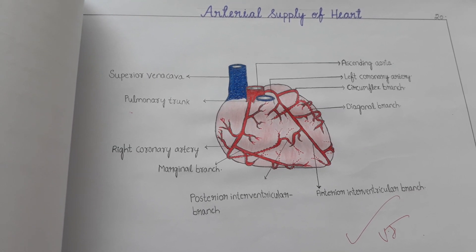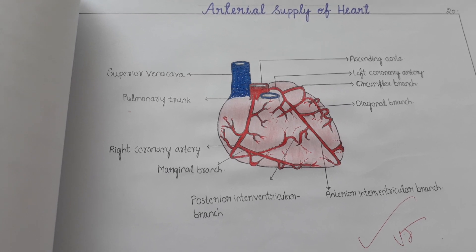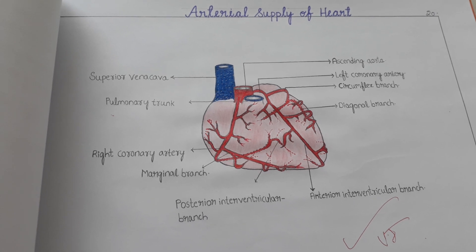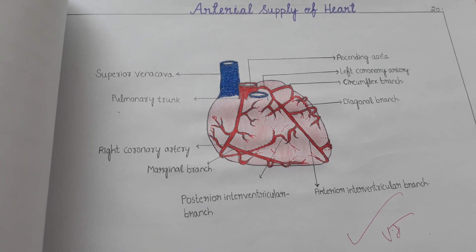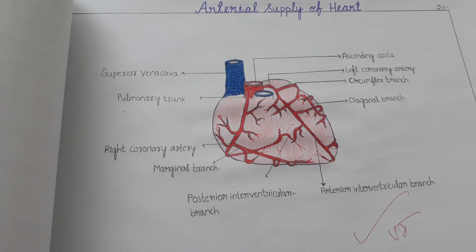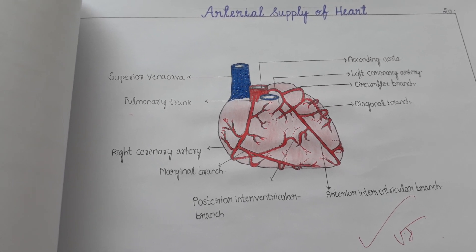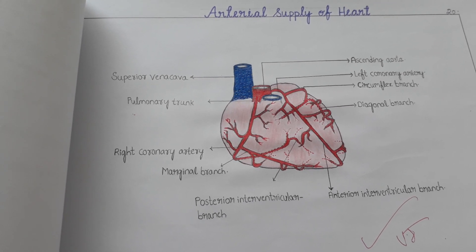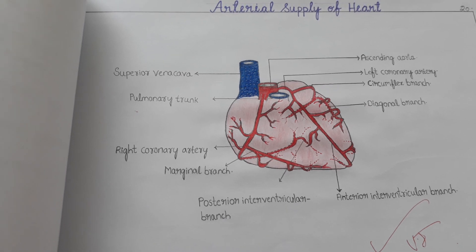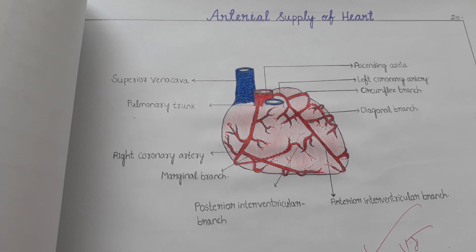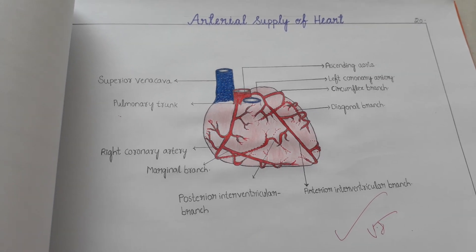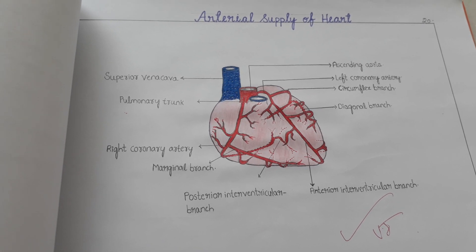This is the arterial supply of the heart. I used to sit and draw for hours together — for any one organ or any bone I would sit for hours together because I wanted to make everything very neatly and clearly. That's why the pictures are very neat.